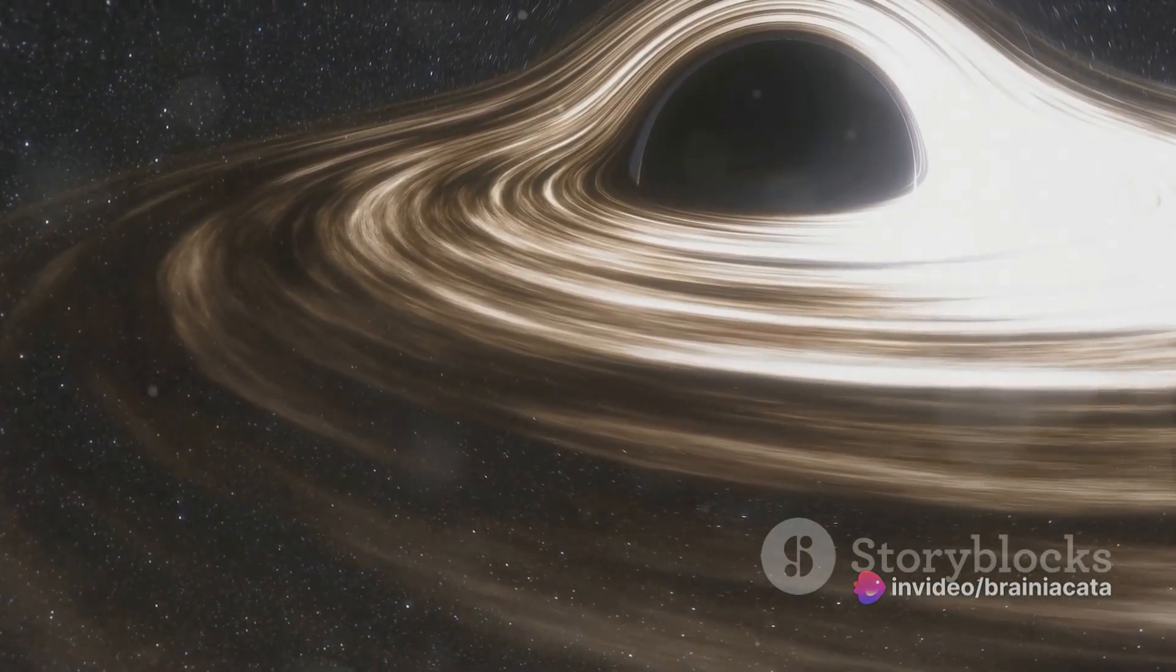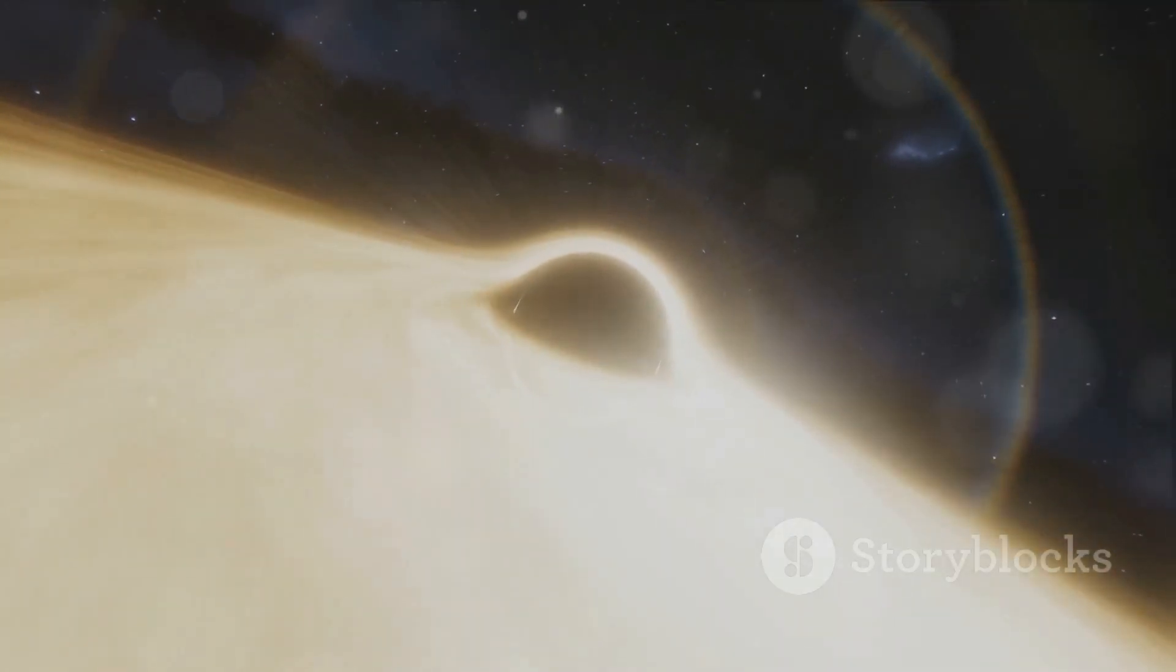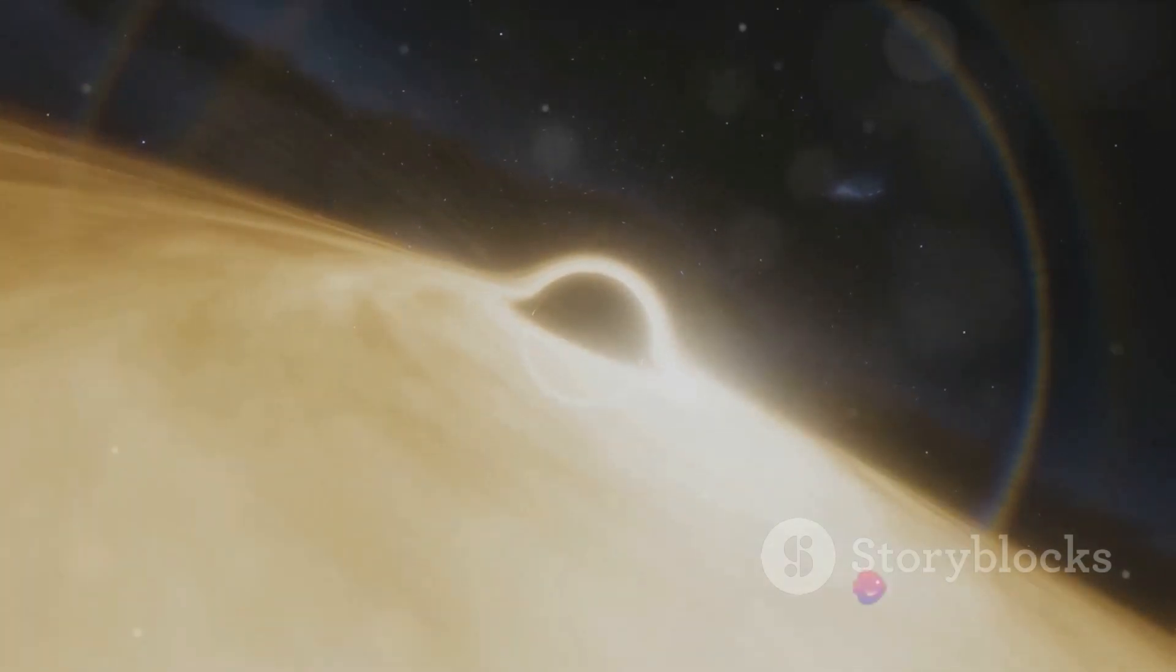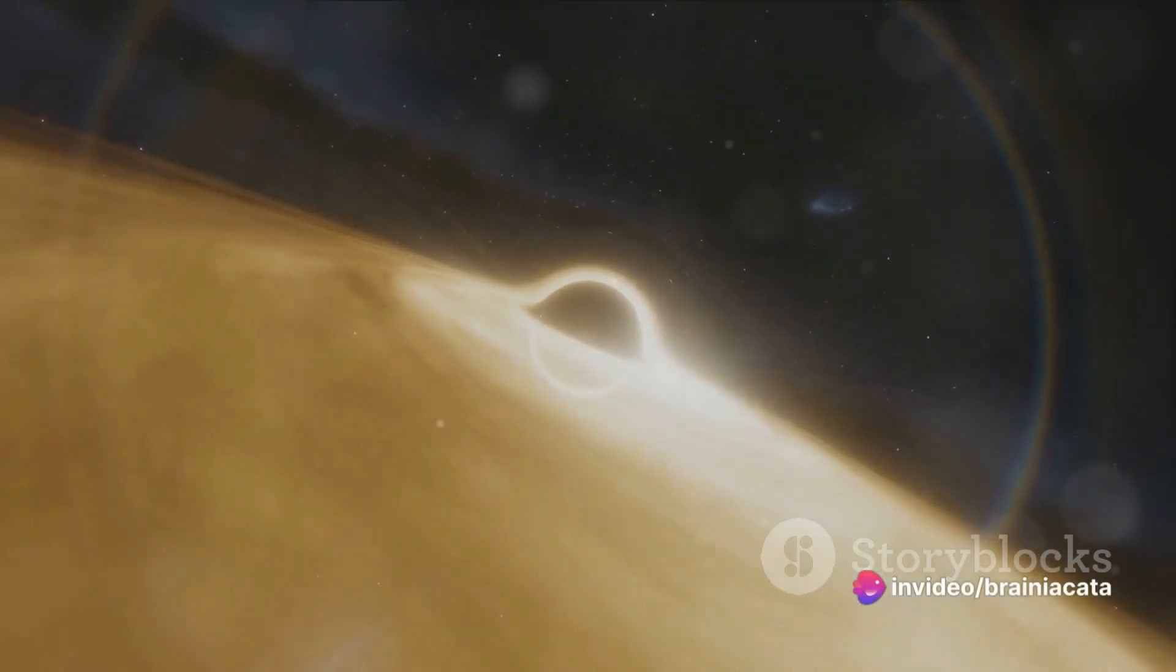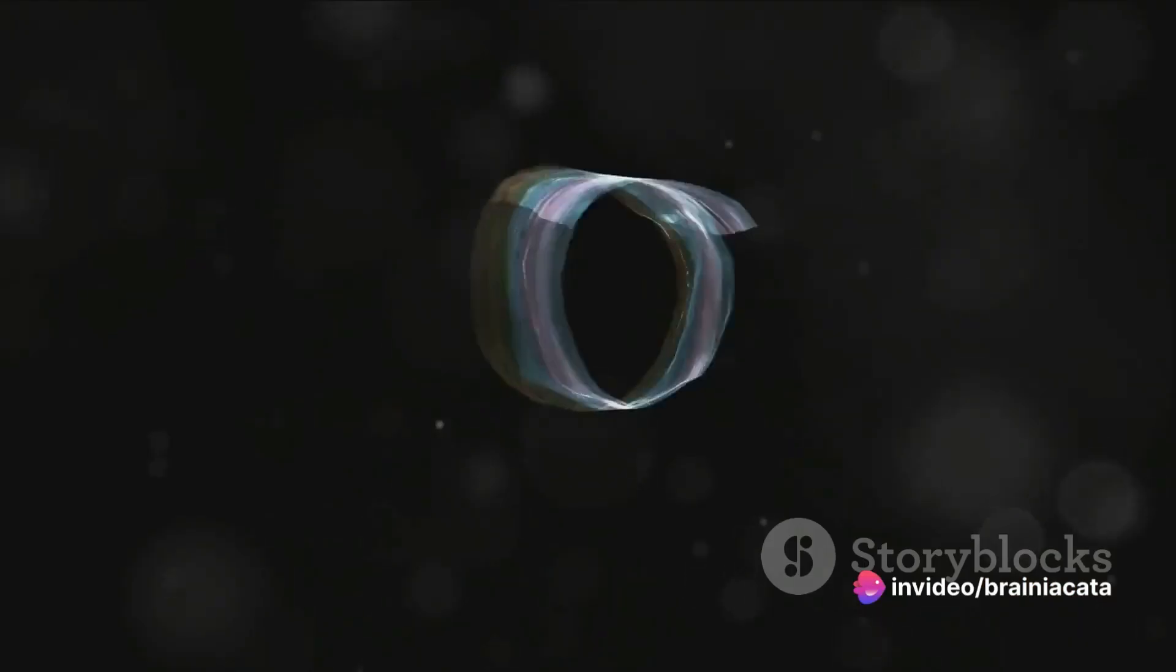The concept helps us understand the distortion of space and time around black holes, an effect known as gravitational lensing. It's as if we're seeing the universe through a cosmic kaleidoscope, where reality is warped and twisted by extreme gravitational fields.